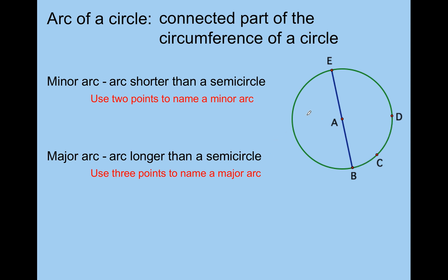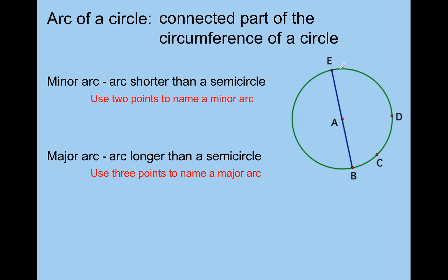How about another minor arc? Arc ED. And how do you name the major arc (the green one)? That would be arc EBD — three points. And I think we have one more minor arc: E all the way around to C, so arc EC. And how do you name the green major arc here? Arc EBC.